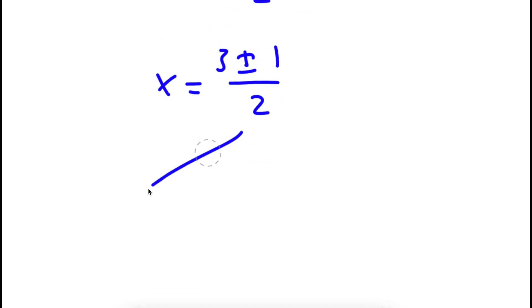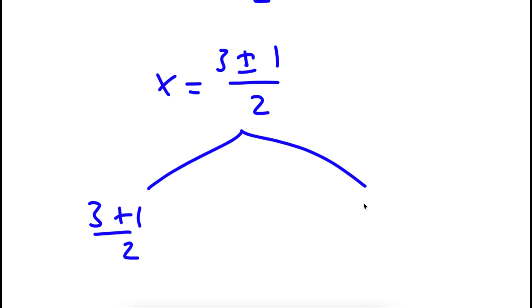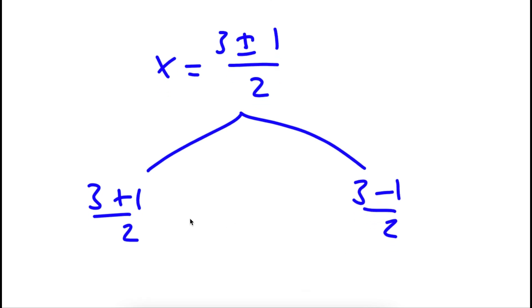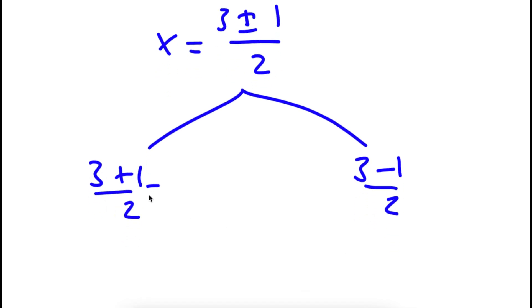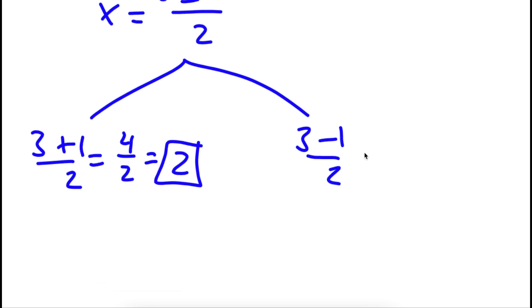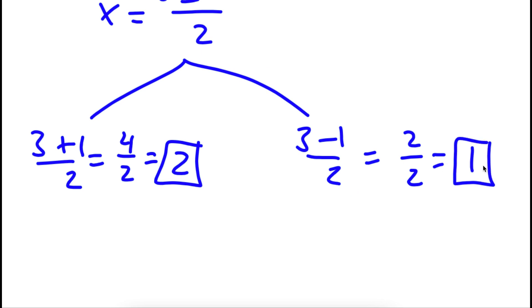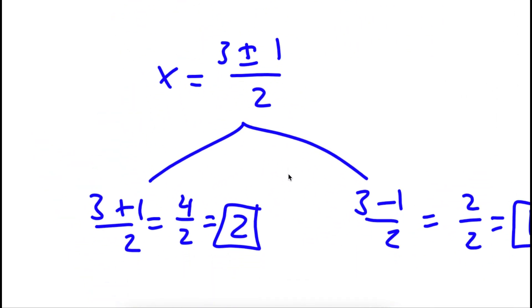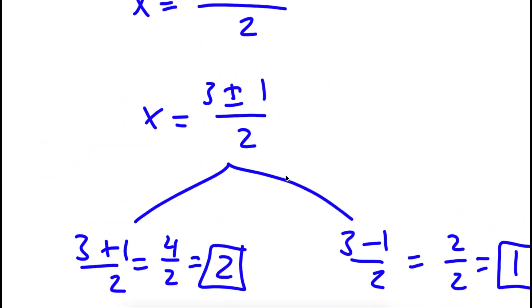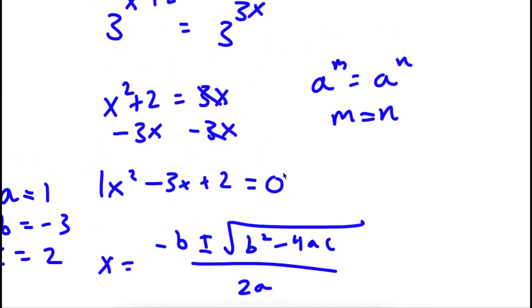This gives me two equations: 3 plus 1 over 2, and 3 minus 1 over 2. For 3 plus 1 over 2, this equals 4 over 2, which is simply 2. For 3 minus 1 over 2, this equals 2 over 2, which is equal to 1. So x equals 2 and x equals 1 are my values.